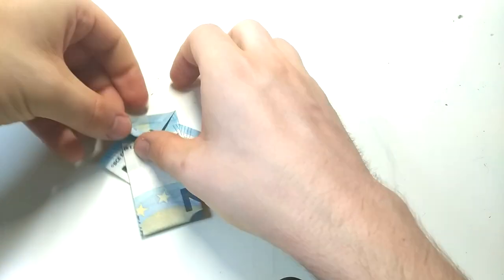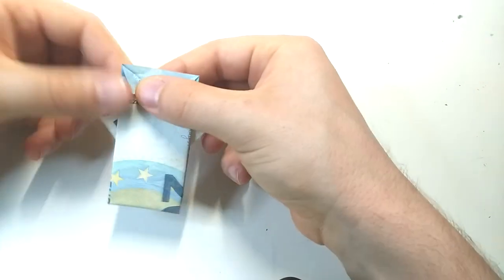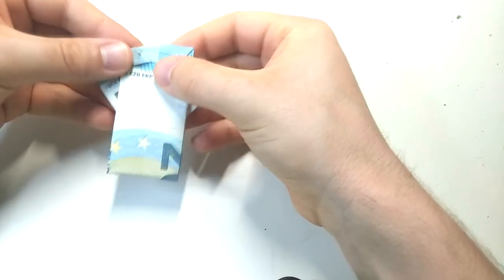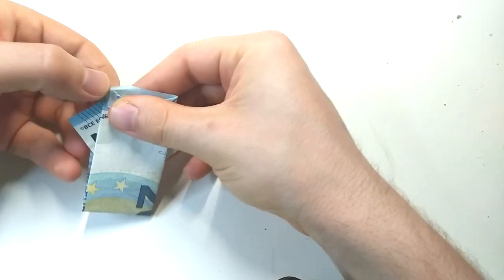Then fold in the two angles to shape the shoulders—I just fold the corner to the center on both sides.